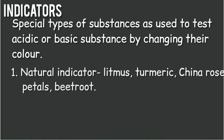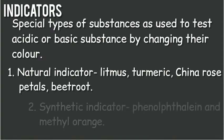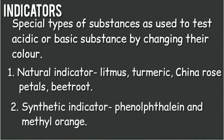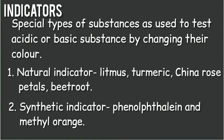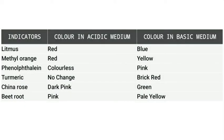Litmus, turmeric, china rose petal, and beetroot are natural indicators. Phenolphthalein and methyl orange are synthetic indicators. Litmus paper gives red color in acidic solution and blue color in basic solution. Methyl orange gives red in acidic solution and yellow in basic solution.